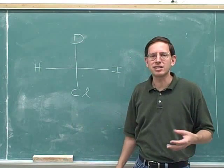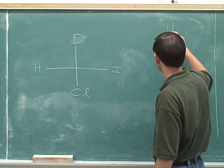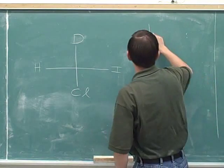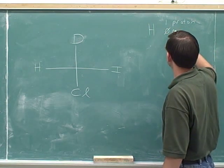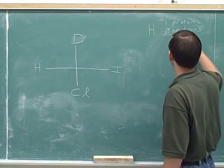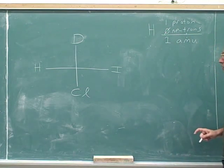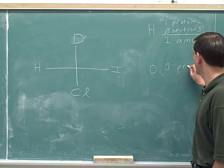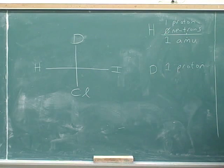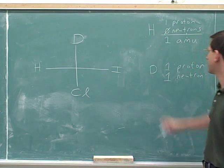What is deuterium? Deuterium is an isotope of hydrogen. A hydrogen nucleus has one proton — that's what makes it hydrogen — and no neutrons, so its atomic weight is one atomic mass unit. Deuterium is an isotope of hydrogen, so it must also have one proton. Isotopes always have the same atomic number; they always have the same number of protons. So deuterium must have one proton, but it must have a different number of neutrons. It turns out that deuterium has one neutron, whereas hydrogen has zero neutrons.